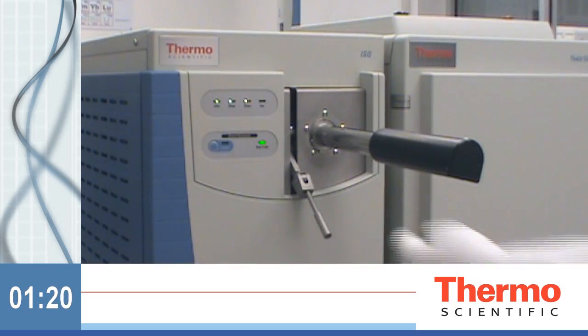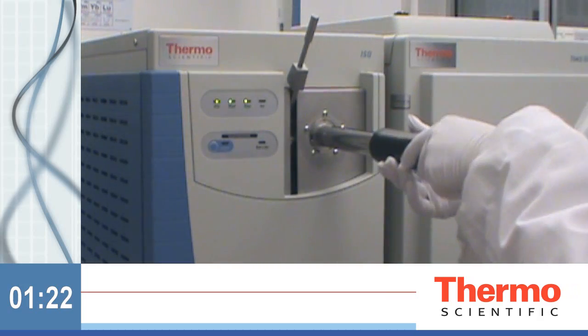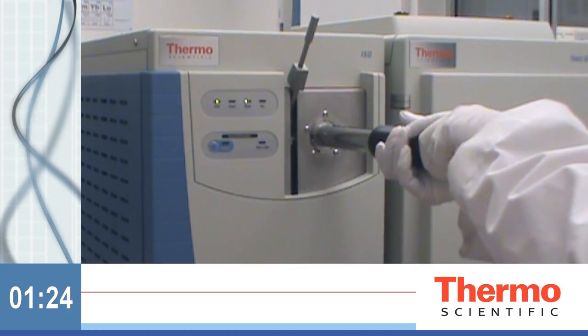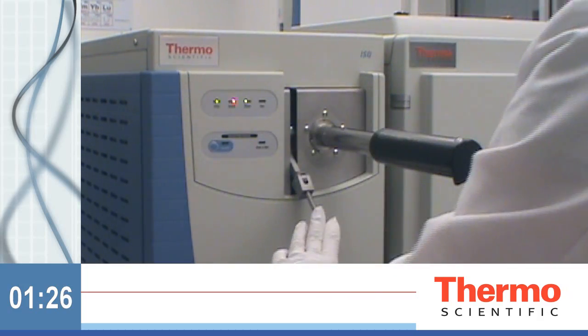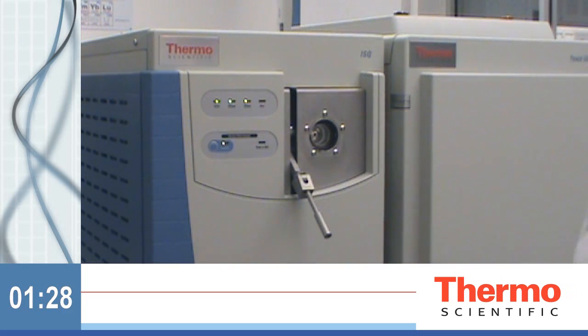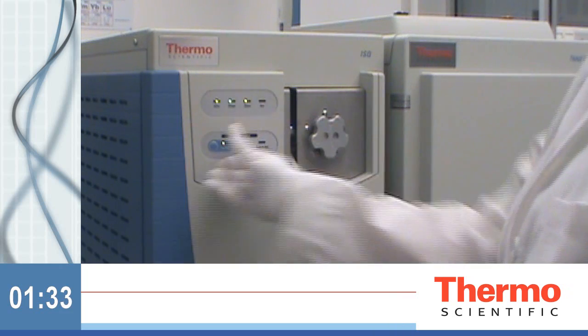When the ready to open light goes green, open the valve, insert the tool, and install the ExtractaBrite ion source. Retract the tool, close the valve, and replace the plug.